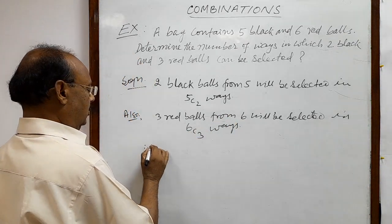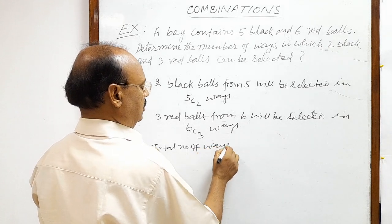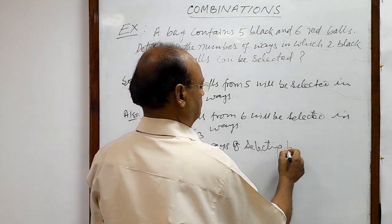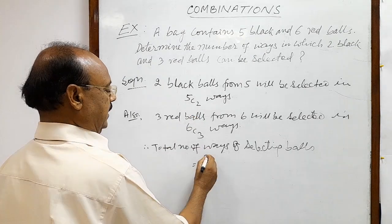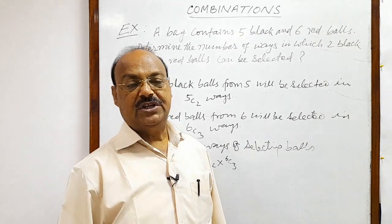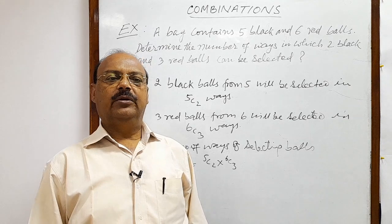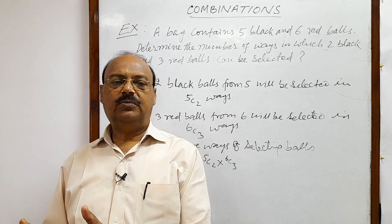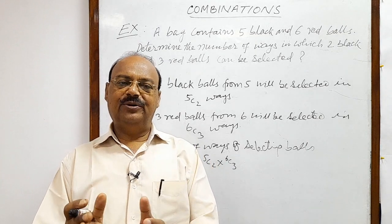Therefore, total number of ways of selecting balls is equal to multiplying 5C2 and 6C3 by fundamental principle of counting. As you know, by fundamental principle of counting, if one part of a job will be done in M ways and rest of the job can be done in N ways, then this entire job can be done in M into N ways.